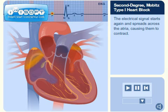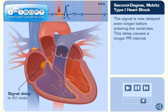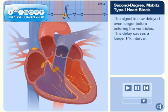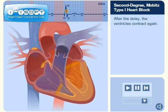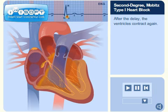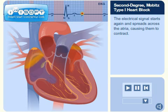The electrical signal starts again and spreads across the atria, causing them to contract. The signal is now delayed even longer before entering the ventricles. This delay causes a longer PR interval. After the delay, the ventricles contract again.